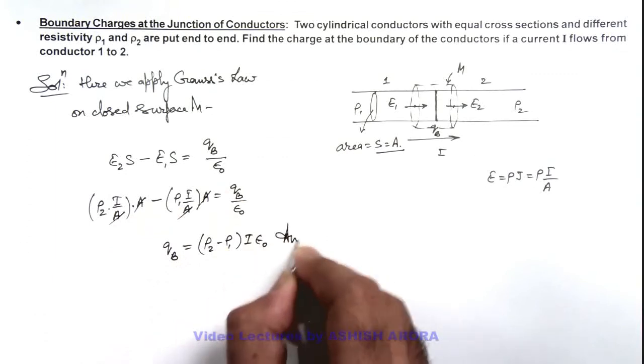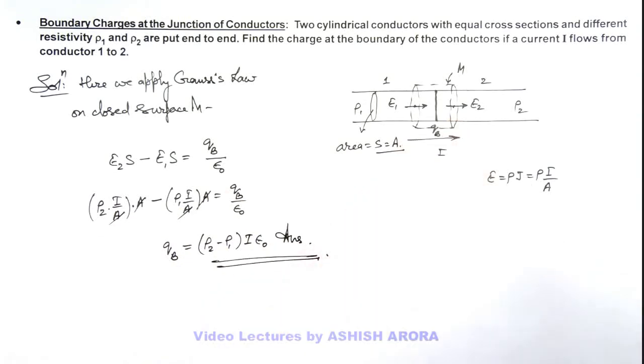That is the result of this problem: the charges accumulating at the boundary of two conductors connected in series which are having different resistivity.